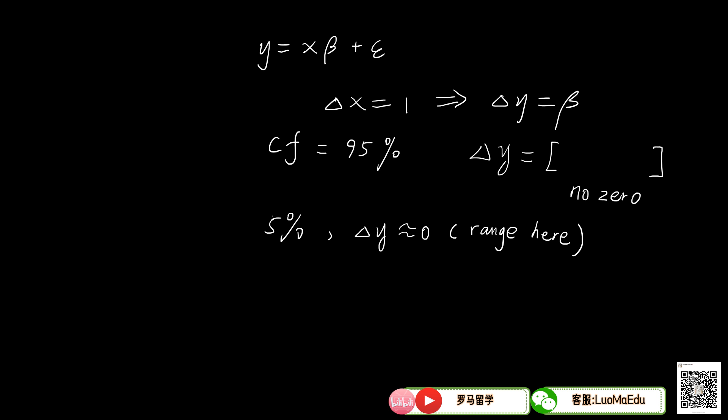And in other 5% of total 100 samples, the y does not change. Of course there's a range there, but we can regard it that delta y will be close to zero.